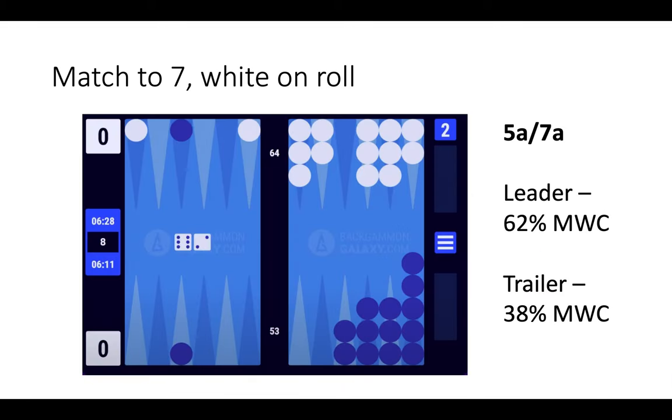Now here you can see an example of a match I viewed online and white has rolled a great number, 6-2, but unfortunately missed the hit. White actually went on to lose this game and then lose the match. By not hitting, white has effectively given away 25% in match winning chances, so the hit here was crucial but it was missed.